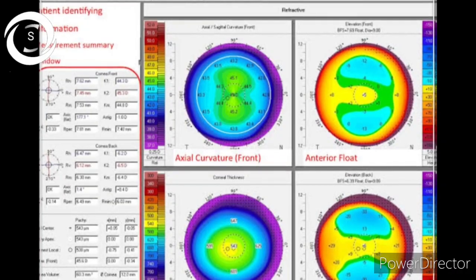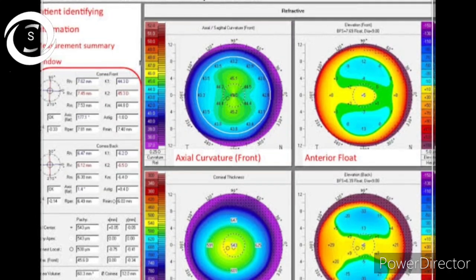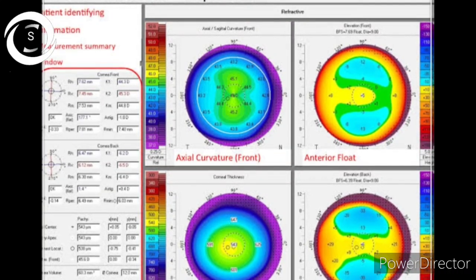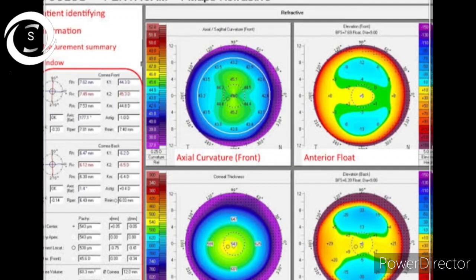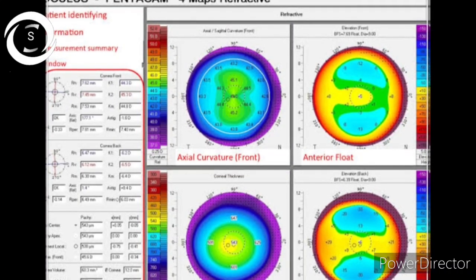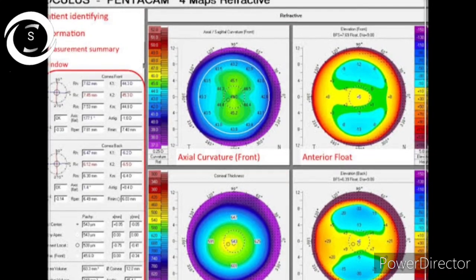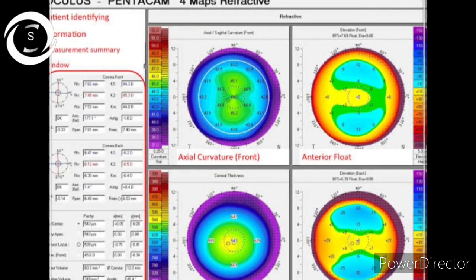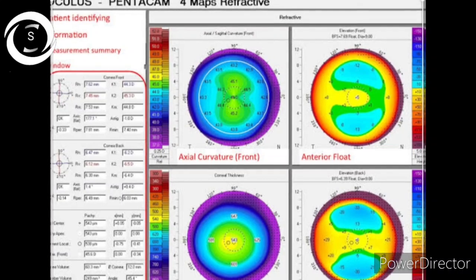Then detection of ocular surface disorders like pterygium, corneal scars, Salzmann nodular degeneration and irregularities of the cornea. Selection of candidate for refractive surgery as well as corneal cross linkages.